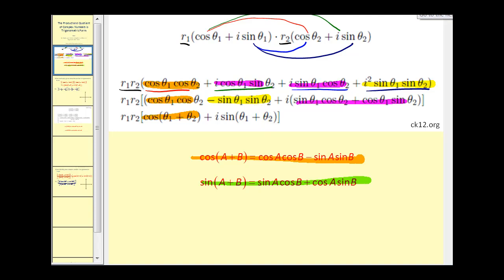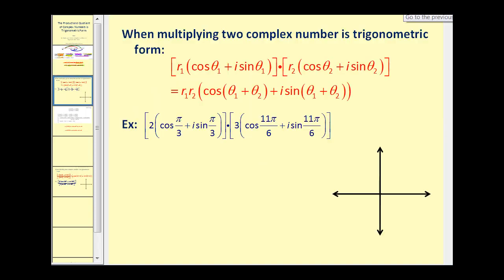Let's go ahead and do an example. So here's the formula. Multiplying these together is quite straightforward. Multiply two times three, that will give us six. And then we just find the cosine of the sum of the two angles. π/3 plus 11π/6. Well π/3 is the same as 2π/6. So 2π/6 plus 11π/6 would be 13π/6. And of course it's going to be the same, i sine θ of 13π/6.